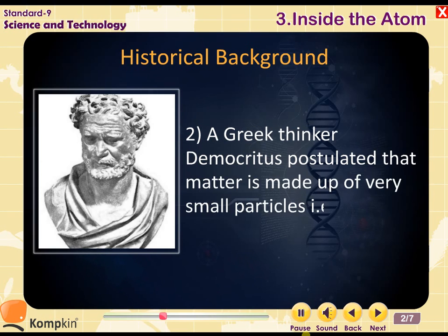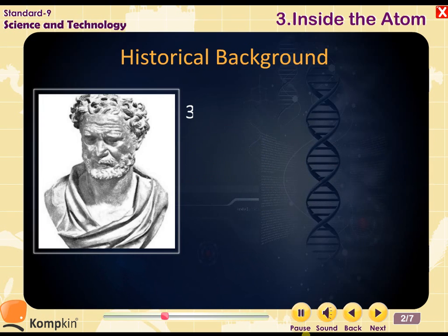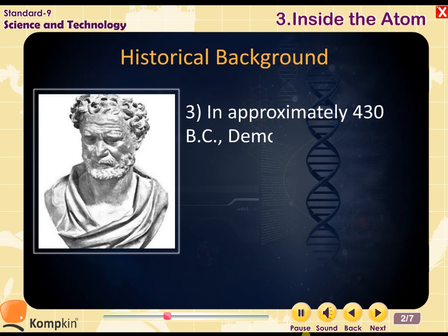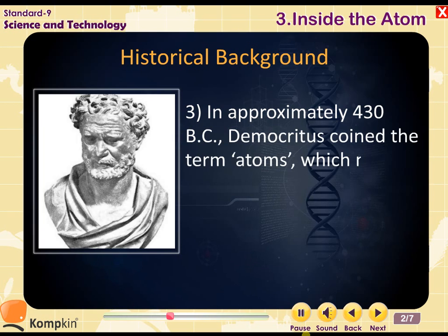A Greek thinker, Democritus, postulated that matter is made up of very small particles called atoms. In approximately 430 BC, Democritus coined the term 'atoms,' which means uncuttable, or the smallest indivisible particle of matter.